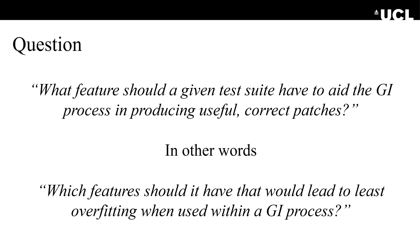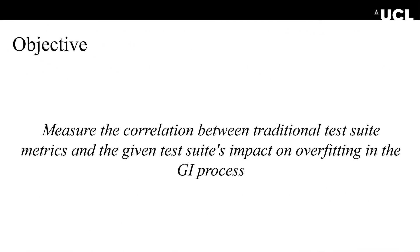This raises the question: what features should a given test suite have to aid the GI process in producing useful and correct patches? Or in other words, which features would lead to the least overfitting when used within GI? This question was already answered in previous work for automated software repair, but there is no work in the literature that investigates this overfitting problem for non-functional improvements. We also want to investigate if automatically generated test cases differ from manually generated ones in their overfitting ratio, and if any criterion can be used to generate better, less-overfitting test suites.